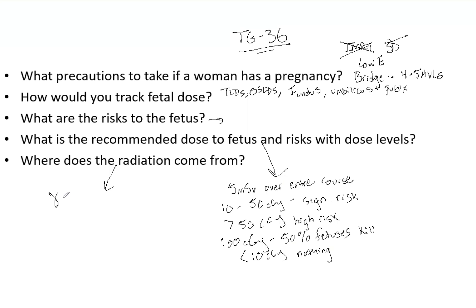Finally, know the sources of radiation: photon leakage through the head, scattered photons from the patient, MLCs, and wedges — scatter is unavoidable even with 3D but can be minimized with field size adjustments. Photoneutrons are only a concern at 10 MV or higher, which is why low energy is preferred. This information is essential for your Part 3 exam — knowing it well, and going slightly deeper, will prepare you thoroughly.